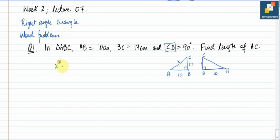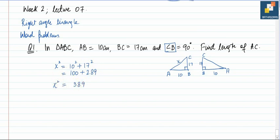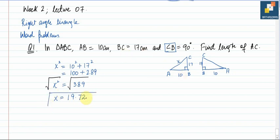Applying Pythagoras, it will be x squared equals 10 squared plus 17 squared. So 10 squared is 100 plus 17 squared is 289. So 100 plus 289 will be 389, equal to x squared. Now we need to take the root, so root of 389 is 19.72. All lengths are in centimeters, so our final answer will be in centimeters as well.